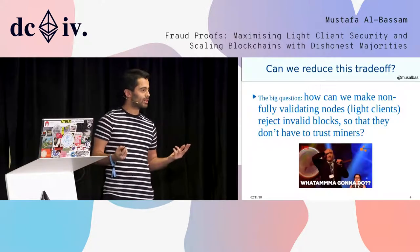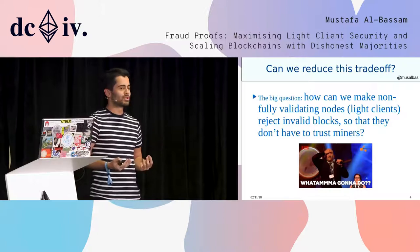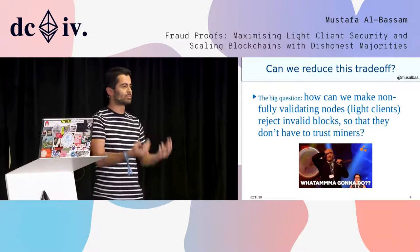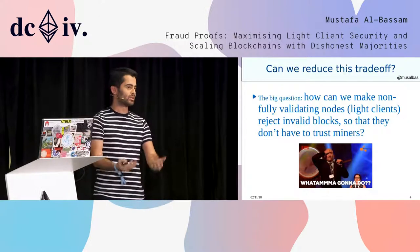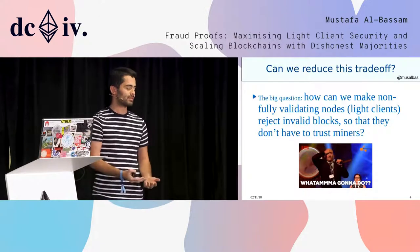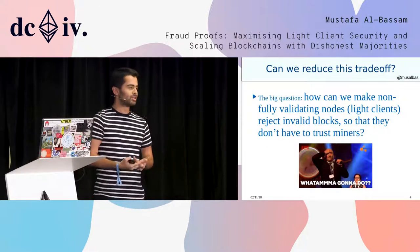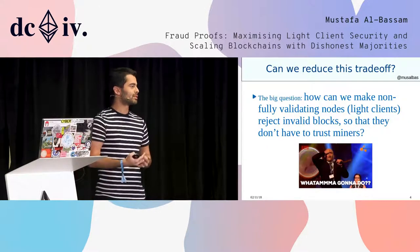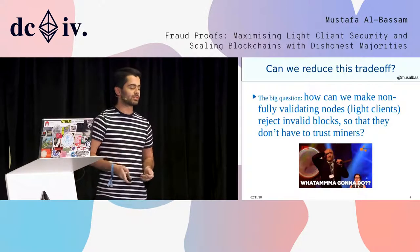The big question we might want to ask ourselves is: how could we actually make it possible for light clients to reject these invalid blocks, just like full nodes do? Because if a full node receives an invalid block, they will reject it. So how can we make a light client do the same thing, so that they don't have to trust the miners, and they don't have to assume that the majority of the consensus is honest?